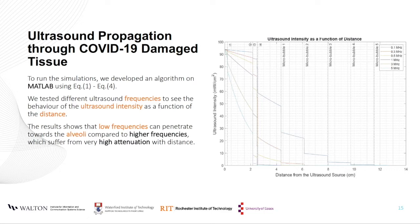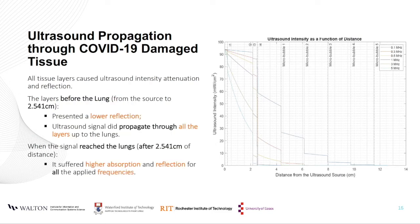In the table, we can see the acoustic properties of each tissue. We also observe that for patients who suffer from severe COVID-19 infections, the lung characteristics change, where the density is larger compared to a healthy lung. We performed simulations to observe the ultrasound propagation through the damaged tissues and tested different ultrasound frequencies to analyze the behavior of the ultrasound intensity as a function of distance. The results show that at lower frequencies, the signal penetrates towards the alveoli, whereas higher frequencies suffer very high attenuation with distance. The tissue layers before the lungs presented lower reflection, and the ultrasound signal propagated through all the layers up to the lung. However, when the signal reached the lungs, it suffered higher absorption and reflection for all tested frequencies.